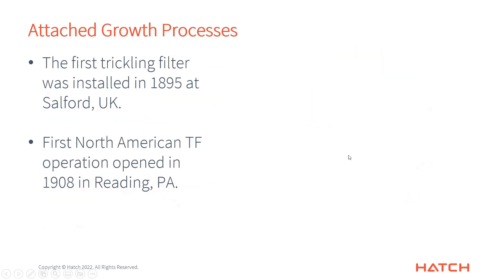The first trickling filter was built in 1895 in Salford, UK, and the first North American one opened in Redding, Pennsylvania in 1908. Both of these predate conventional activated sludge, which didn't arrive until the early 1920s.